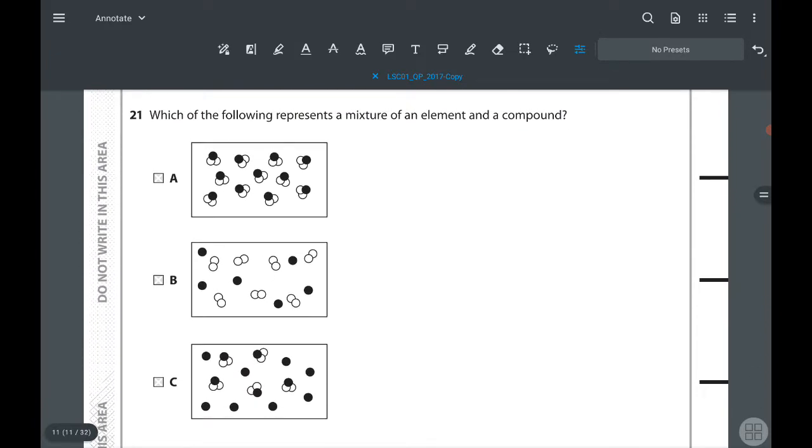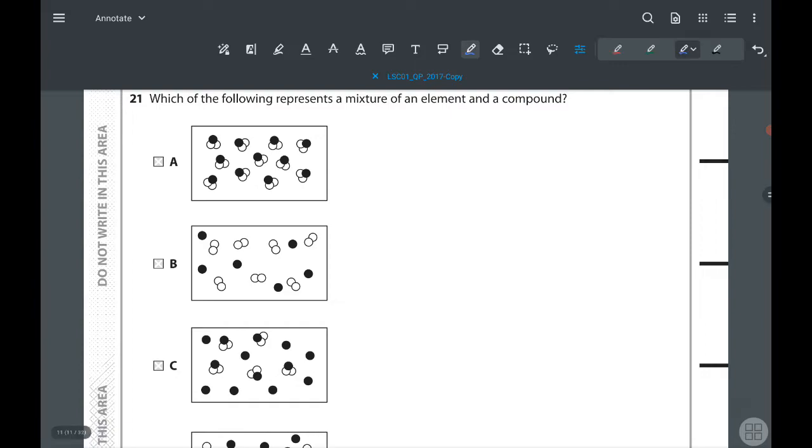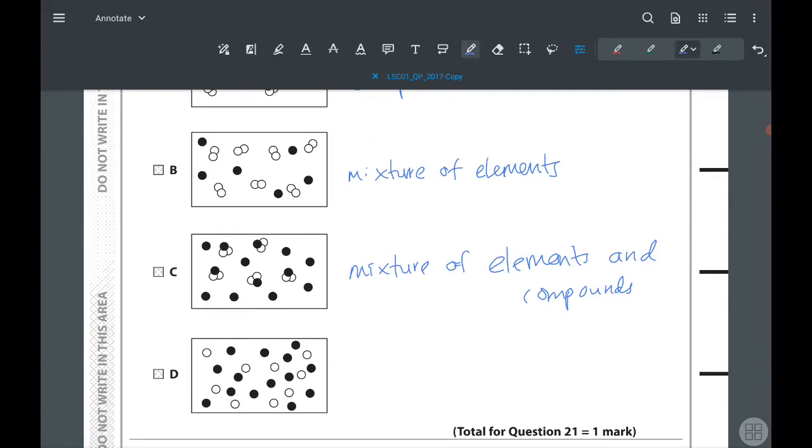Question 21: which of the following represents a mixture of an element or a compound? This is only compound. This is a mixture of elements. This is a mixture of elements and compounds. Then this last one is a mixture of elements once again.